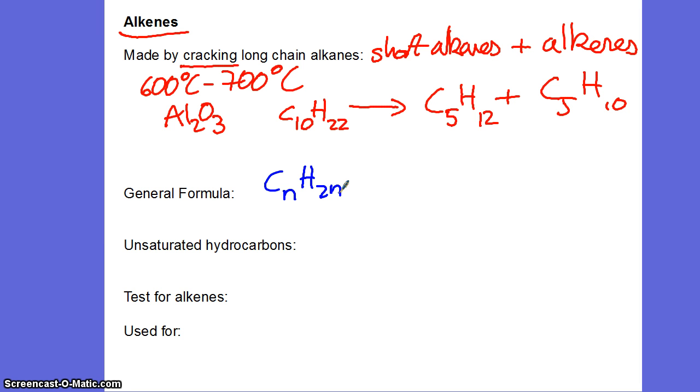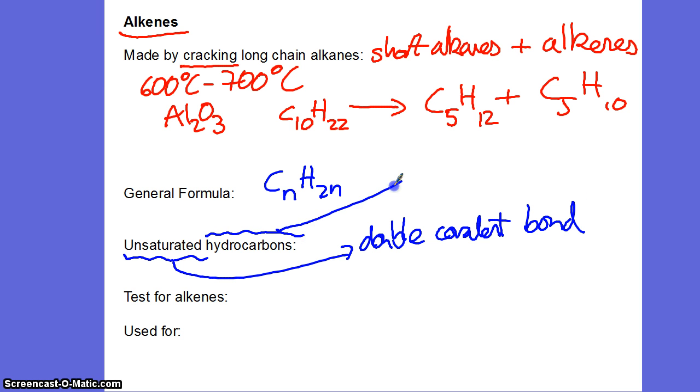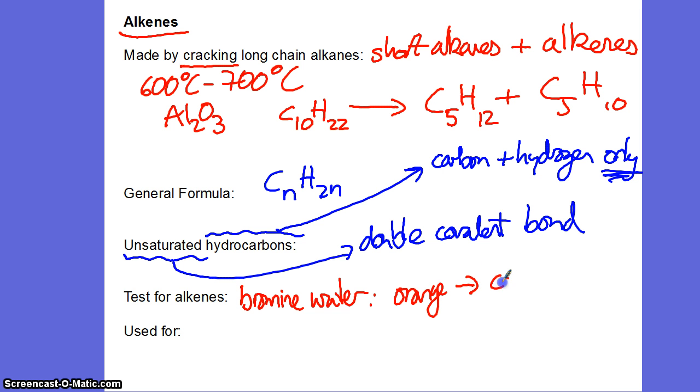We describe alkenes as unsaturated hydrocarbons. Unsaturated means that instead of just having single covalent bonds, they also contain a double covalent bond. Hydrocarbons means it's a compound that contains carbon and hydrogen only. This double bond means that our alkenes are really reactive. If we put an alkene in bromine water, which is a nice orange liquid, it goes from orange to colourless. That tells you very quickly that an alkene is present.